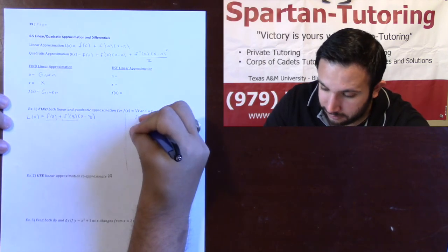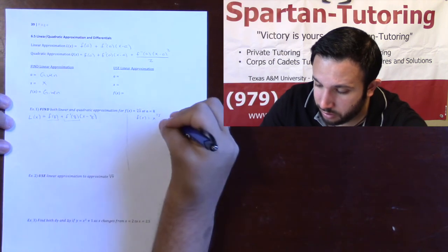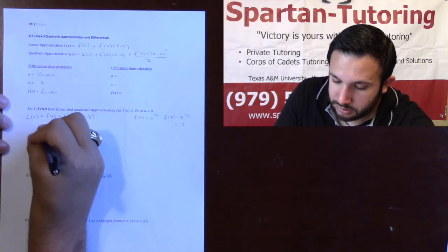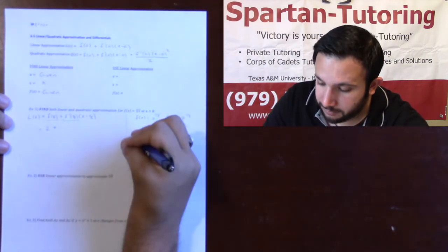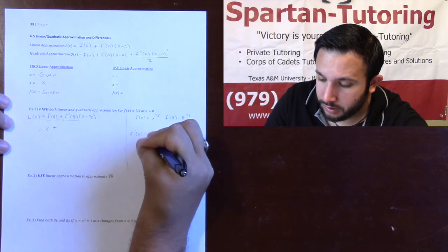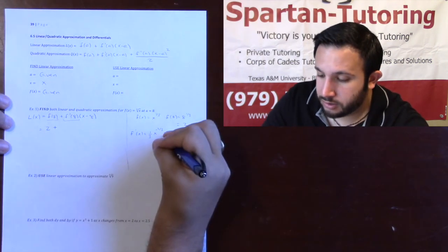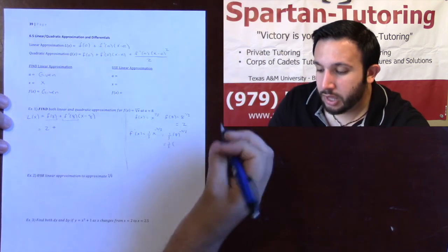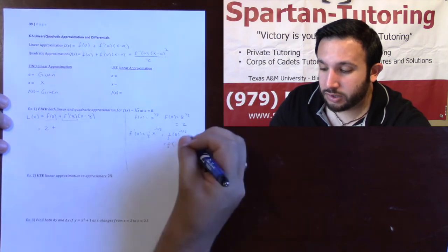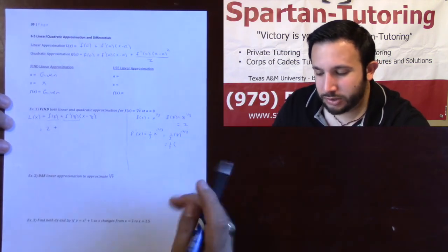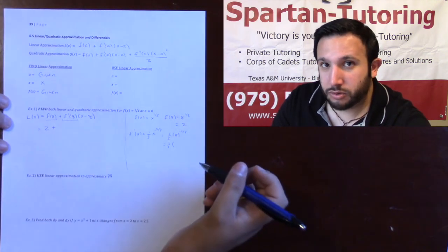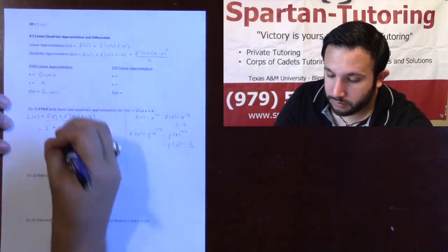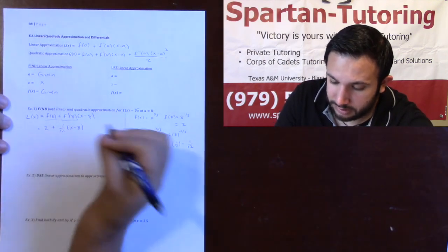If f(x) equals the cube root of x, which is x to the one-third, then f(8) equals 8 to the one-third, which is 2. So we have 2 plus... now let's find f'(8). The derivative f'(x) is one-third x to the negative two-thirds. Plugging in 8: that's one-third times 8 to the negative two-thirds, which is one-third times one-fourth, giving us one-twelfth. So L(x) equals 2 plus one-twelfth times (x minus 8).